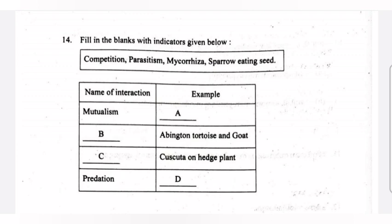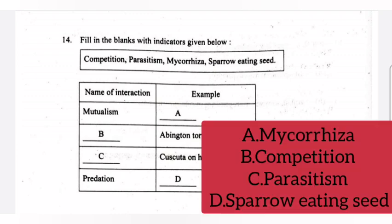Question 14: Fill in the blanks with indicators given below. Answer: A - Mycorrhiza, B - Competition, C - Parasitism, D - Sparrow eating seed.